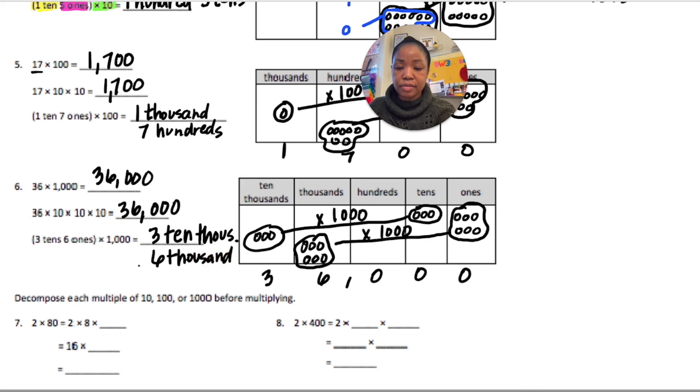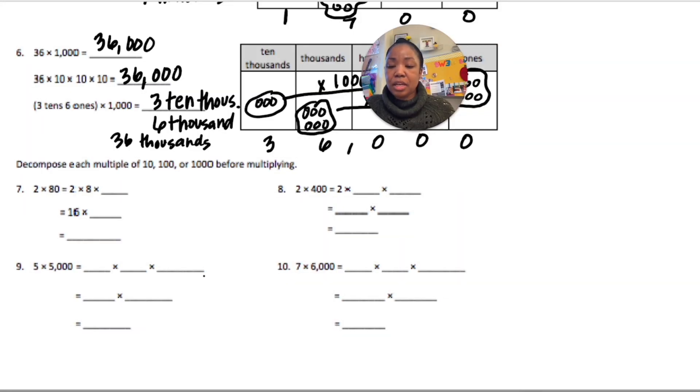Or we could have said 36 thousands. That would also work. Okay, on to number 7. Okay, for number 7, we are decomposing each multiple of 10, 100, and 1,000. So, I'm going to focus on the multiple that is times 10.